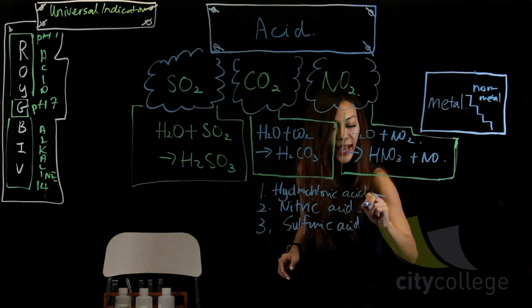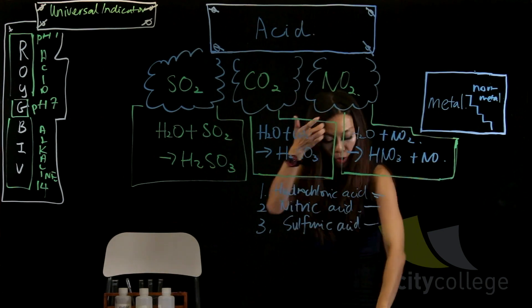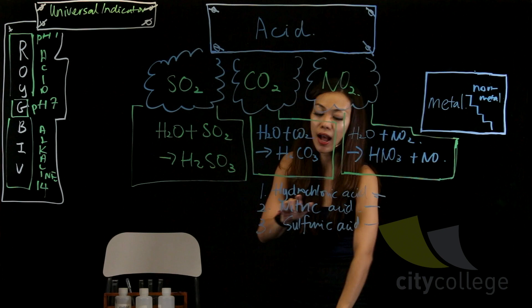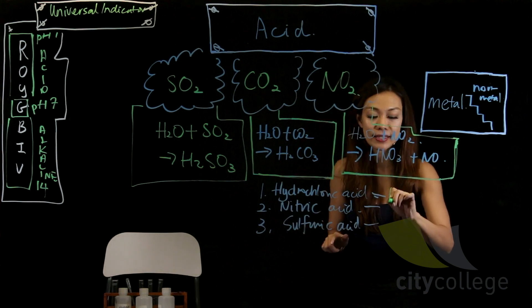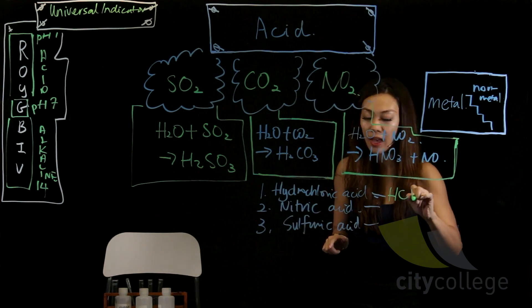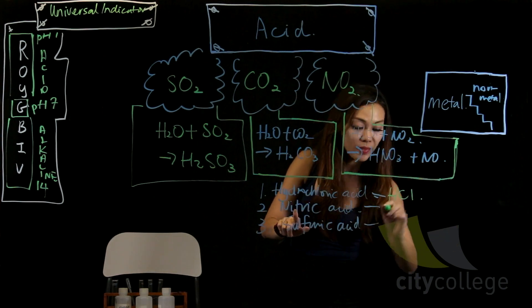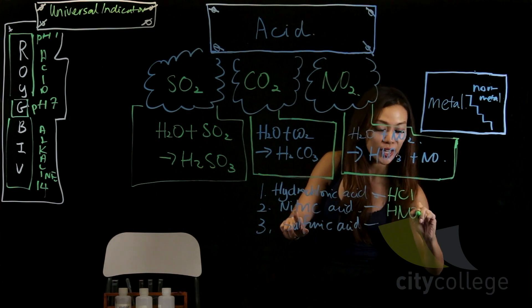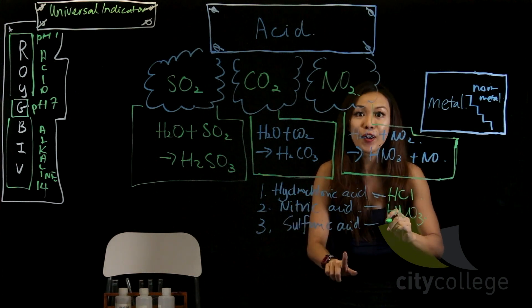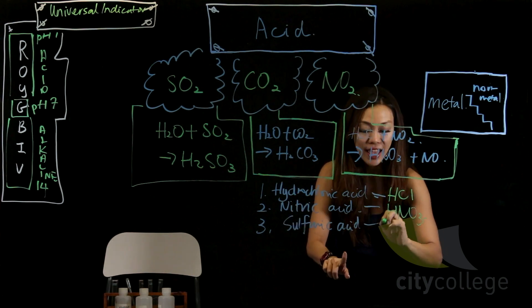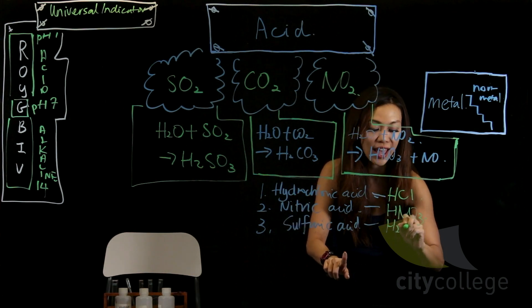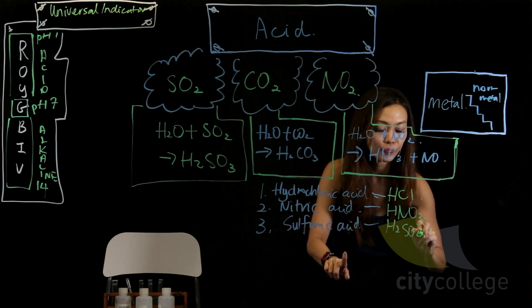So, what exactly are their formulas? Now, hydrochloric acid is HCl. Nitric acid is what? HNO3. Sulfuric acid is H2SO4.